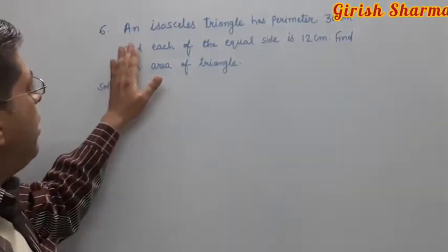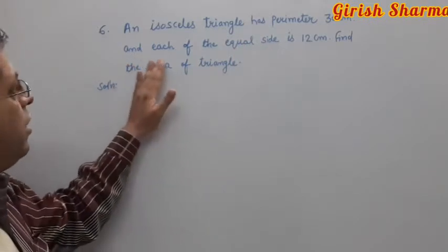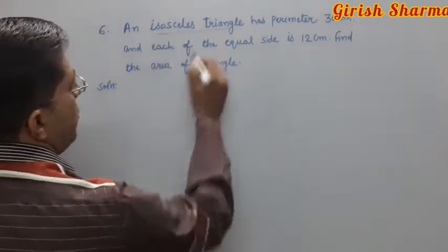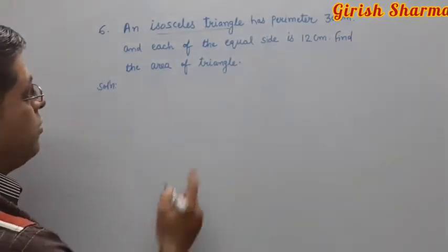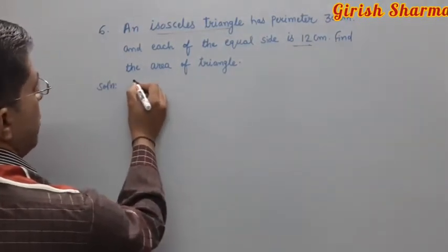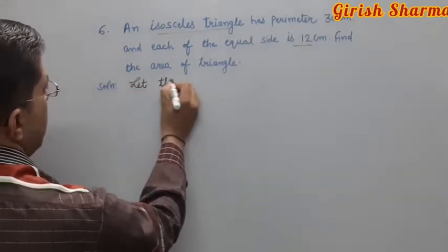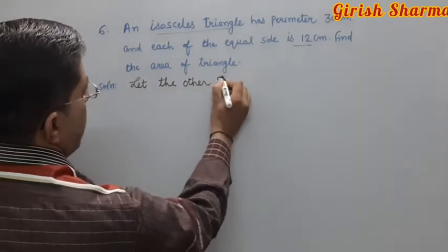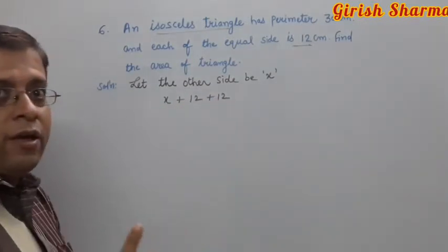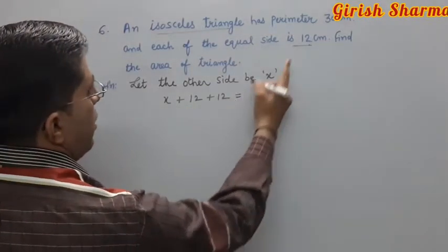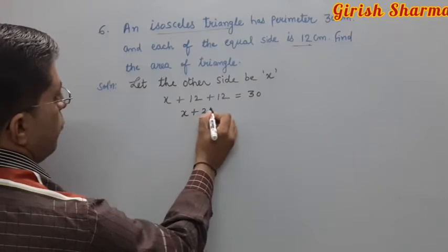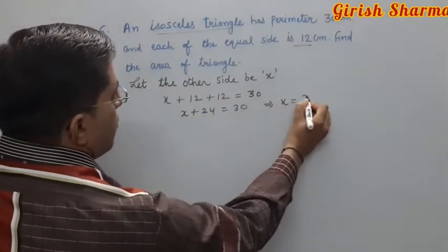The next question: an isosceles triangle has perimeter 30 centimeters and each of the equal sides is 12 centimeters. Find the area. Since two sides are equal at 12 each, let the third side be x. Then 12 plus 12 plus x equals 30, so 24 plus x equals 30, giving x equals 6 centimeters.